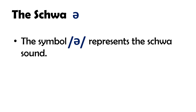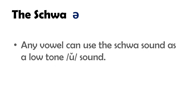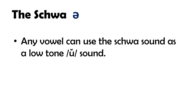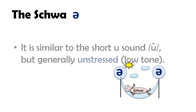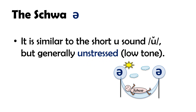The symbol represented by an inverted letter E represents the schwa sound. Any vowel can use the schwa sound as a low tone short vowel sound. It is similar to the short vowel sound but generally unstressed or low tone.